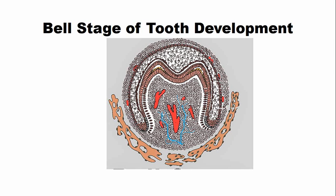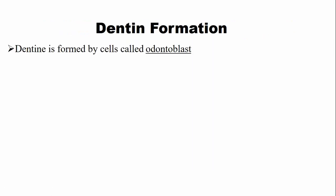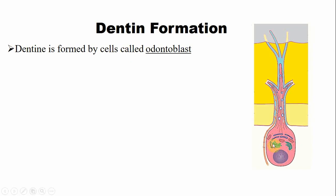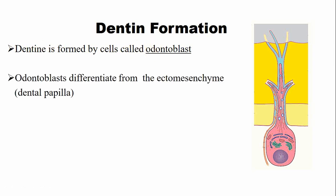Dentine formation begins at the Bell's stage of tooth development. The process of dentine formation is known as dentinogenesis. Dentine is formed by cells known as odontoblasts. This is an odontoblast cell body, and this is the cell process that is inside the dentine. These odontoblasts differentiate from the ectomesenchymal cells known as the dental papilla.